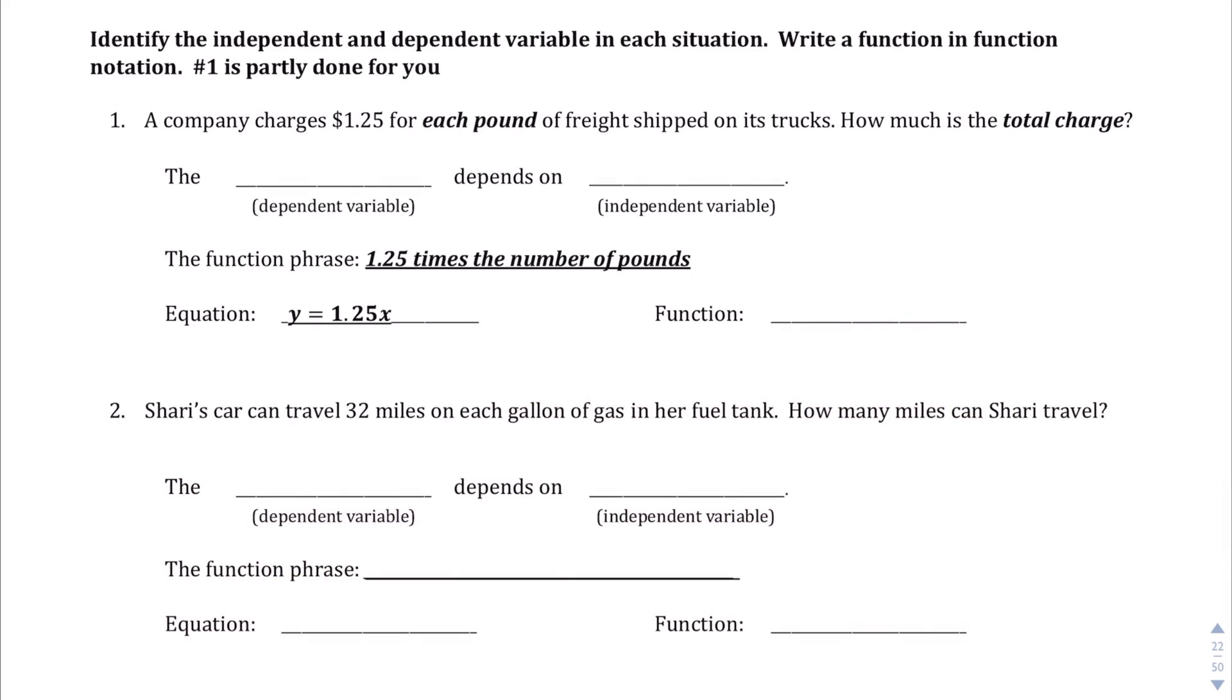Okay, so we are doing page 28 of Algebra 1A Credit 2, and all the previous pages should have prepared us for this part. We're talking about independent and dependent variables in each situation. So a company charges $1.25 for each pound of freight shipped on its trucks. How much is the total charge? The dependent variable that goes up and down is the total charge, and that is dependent on the weight.